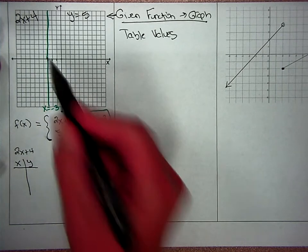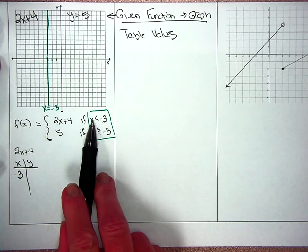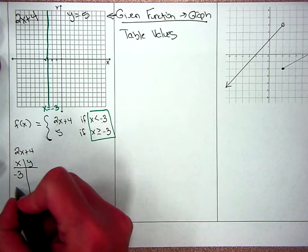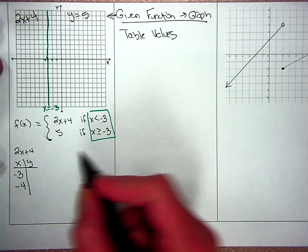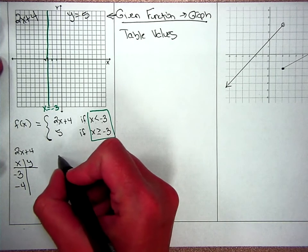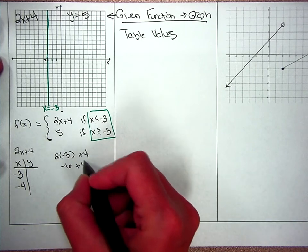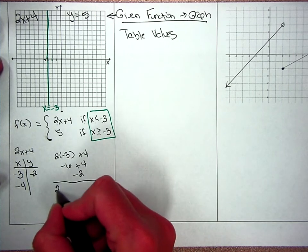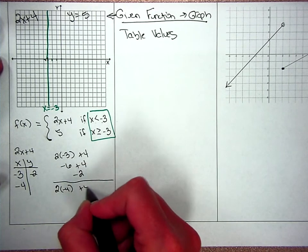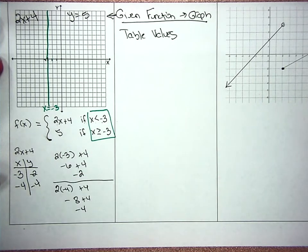I make my table of values. Whatever your divide line is, that's your first x value. And then it says go smaller than that. So 1 to the left would also be negative 4. I'm going to plug those values in. 2 times negative 3 plus 4 is negative 6 plus 4 is negative 2. And then plug negative 4 in. This negative 8 plus 4 is negative 4. So now I have these two points to plot.